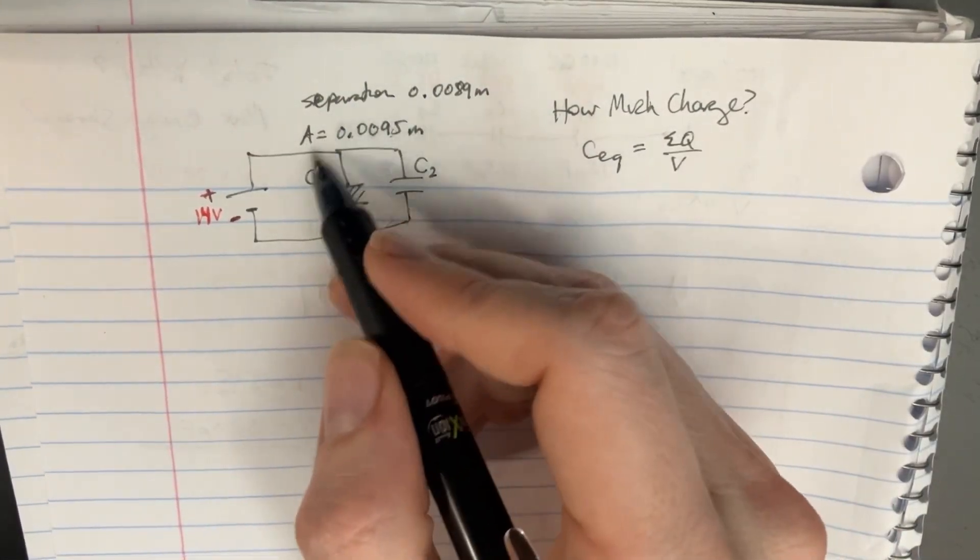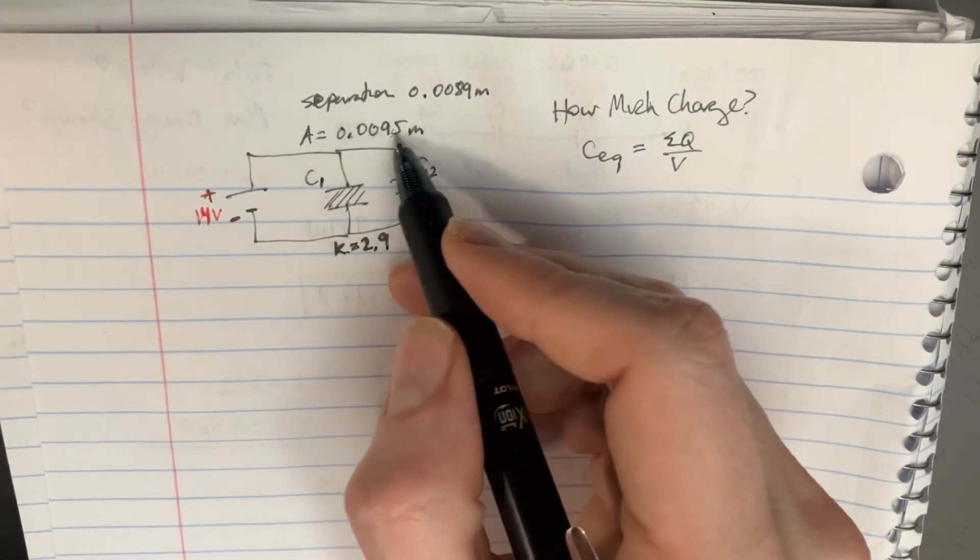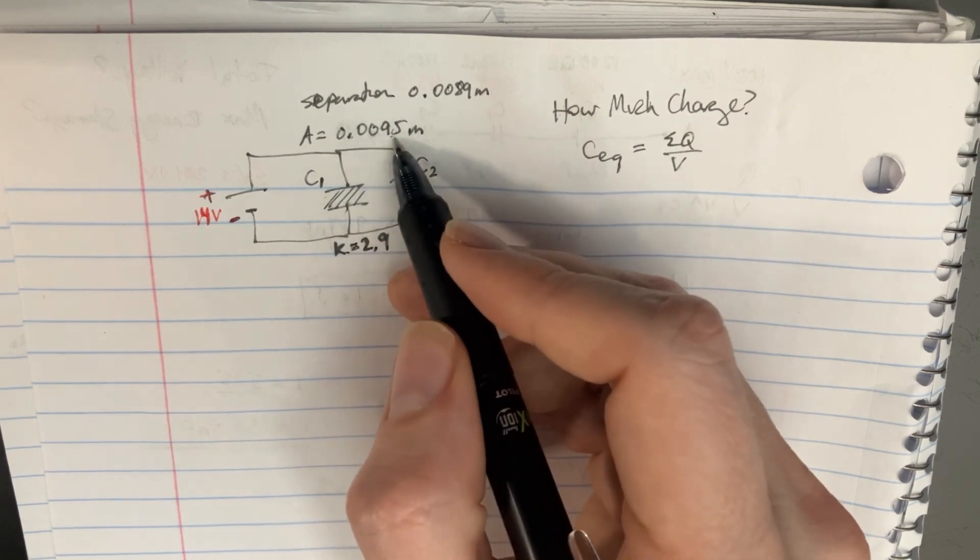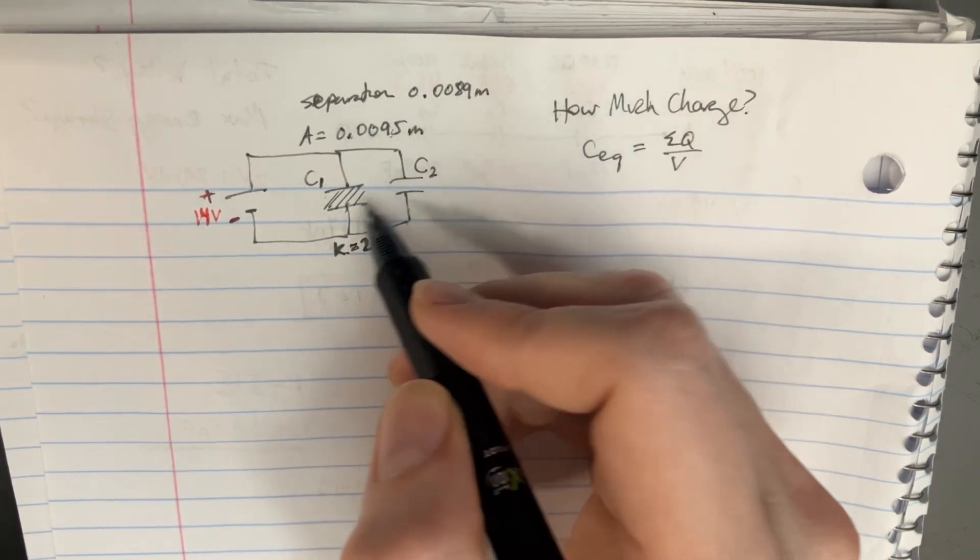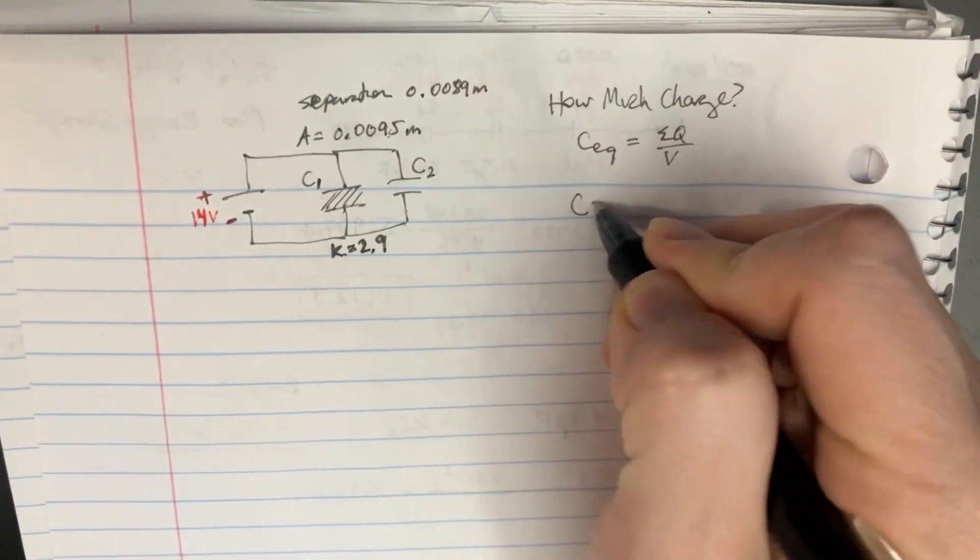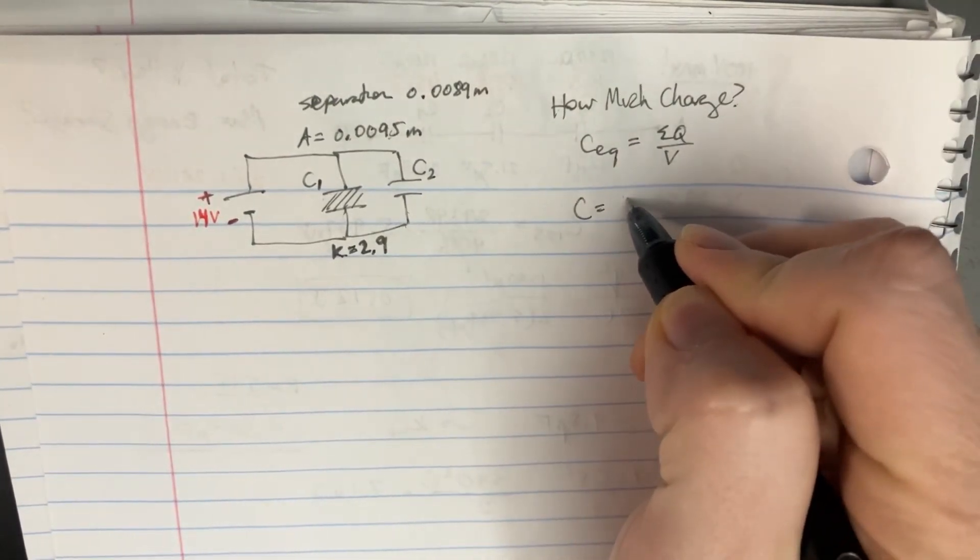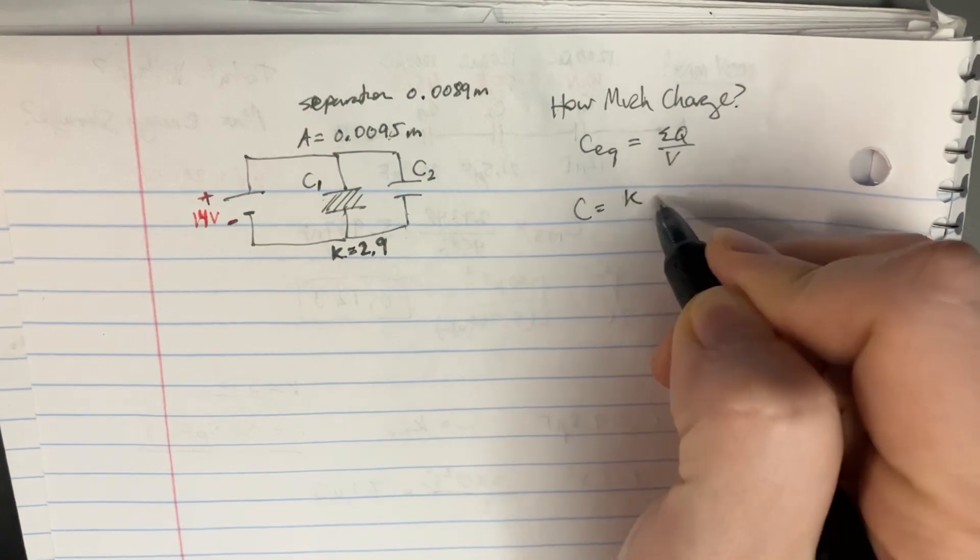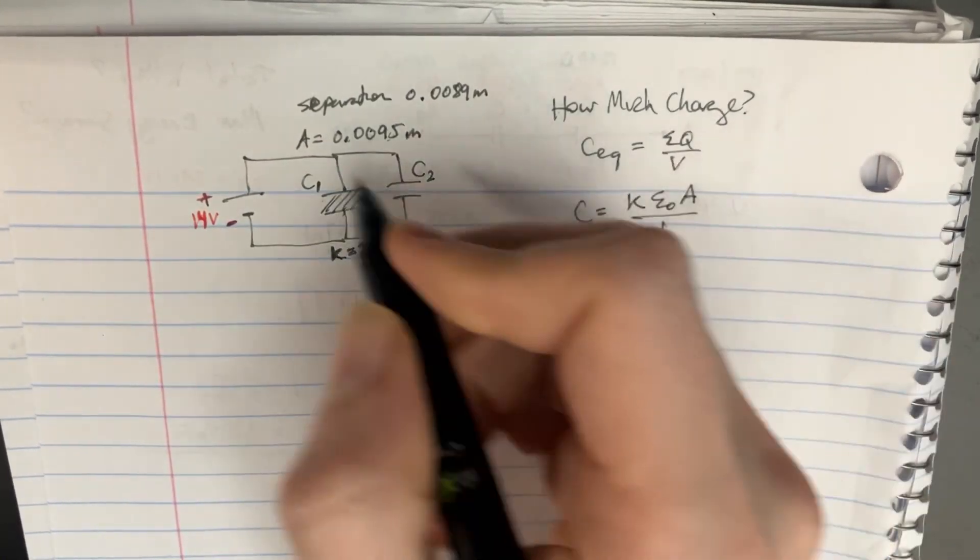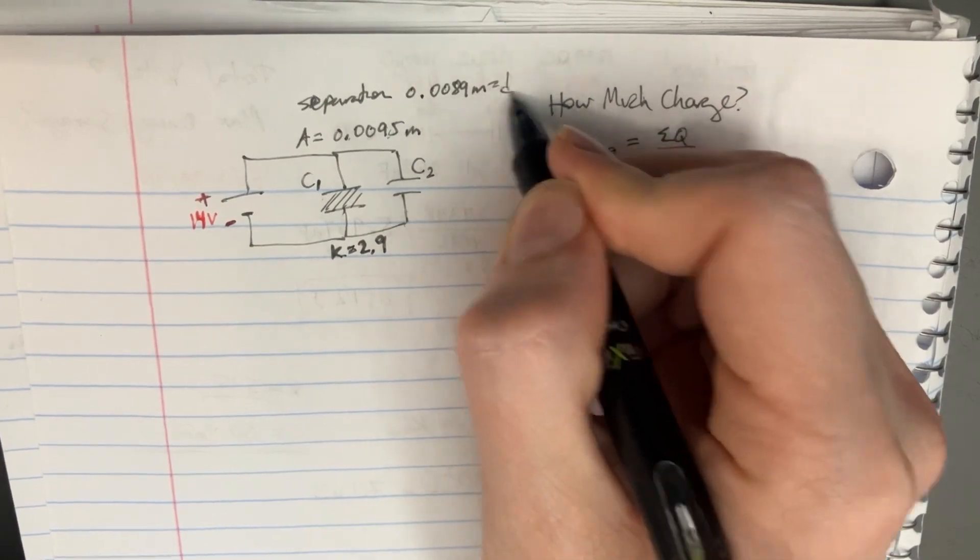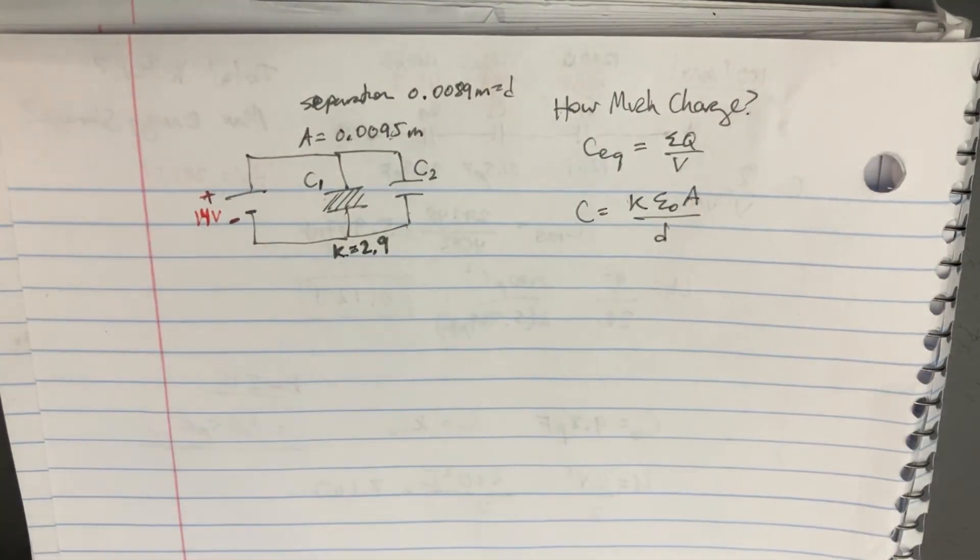These things have an area of this very small area and the separation of this much distance. So we know that the capacitor should be equal to k, if there is one, epsilon naught A over d. And so the separation is of course d, and then we're going to go ahead and put these together.